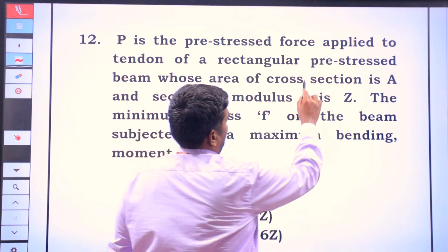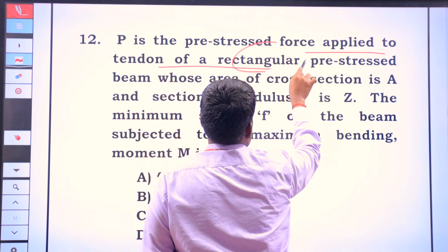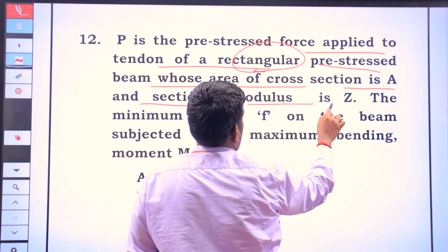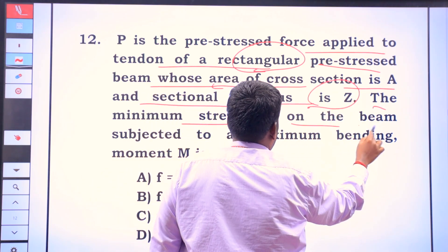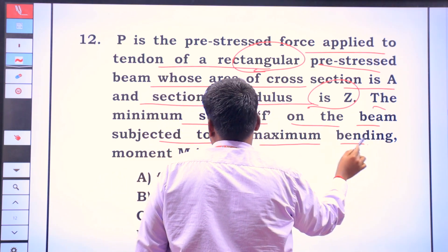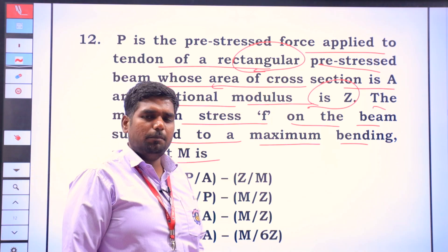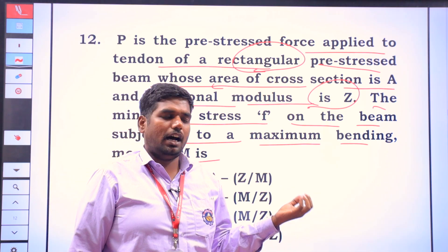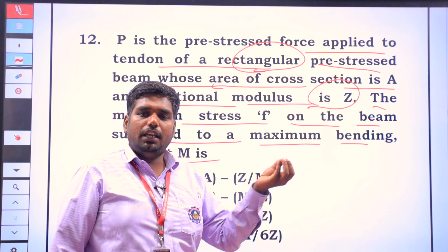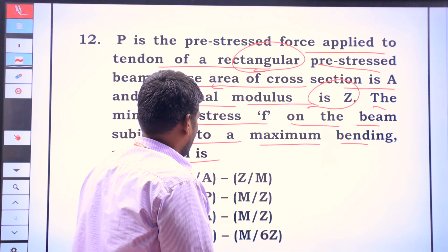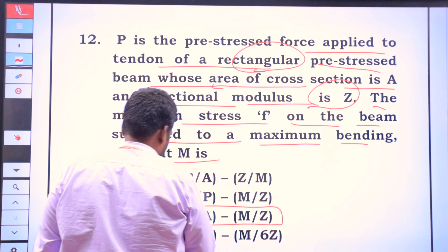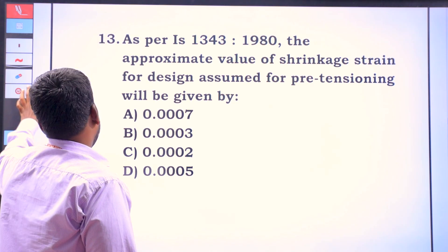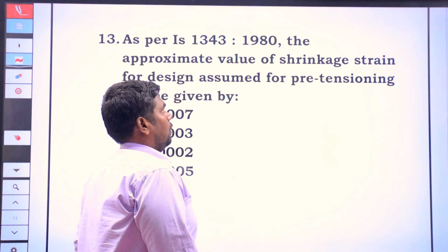V is the pre-stressed force applied to the tendon of a rectangular pre-stressed beam whose area of cross-section is A and the sectional modulus is Z. The minimum stress of F on the beam subjected to a maximum bending moment M is P by A.